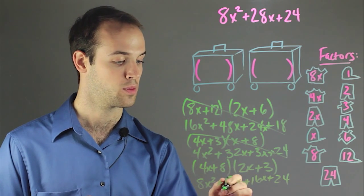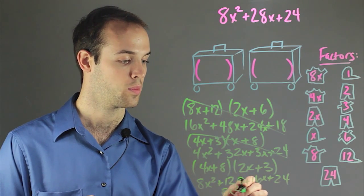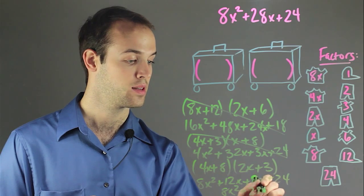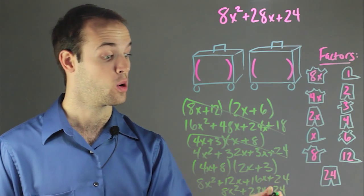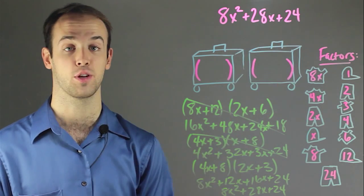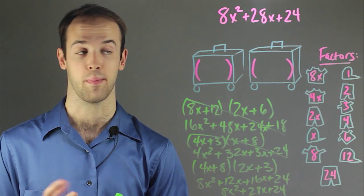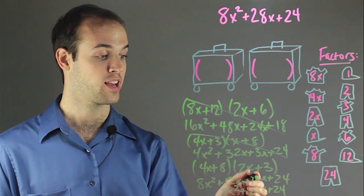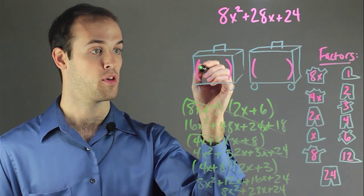And if I combine these middle terms, I can see that I'm going to get 8x squared, plus 28x, plus 24. And lo and behold, this trinomial actually matches the one that I'm going to need for the trip. So I know that this packing of clothing is going to work, so I'm going to go ahead and put that in.